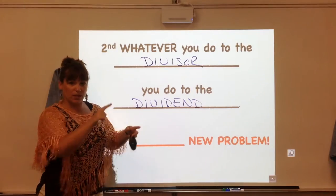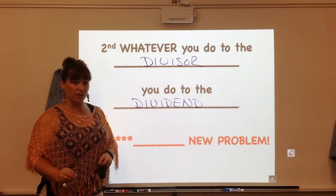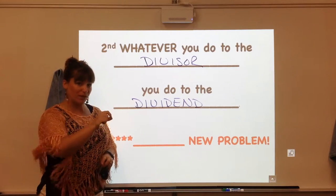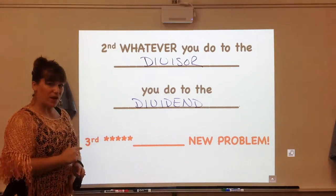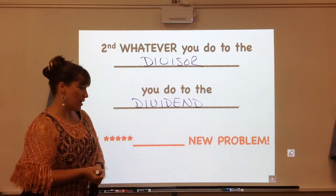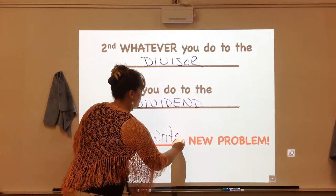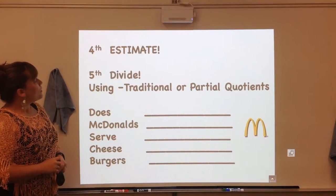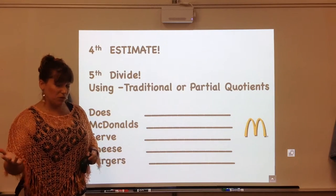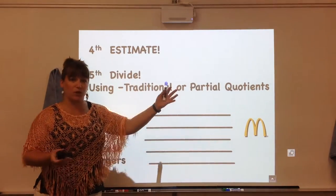After you manipulate the decimal point by multiplying by powers of 10, you'll have a whole number as your divisor - yay - and then your dividend will be different, the decimal point will be in a different spot. The third point I made it right here just because I want you to make sure you get into this habit is I want you to rewrite the new problem that you now have. After you have that new problem it's just like the last lesson, dividing by a whole number. You're going to estimate and divide using the traditional or partial quotients that we went over.